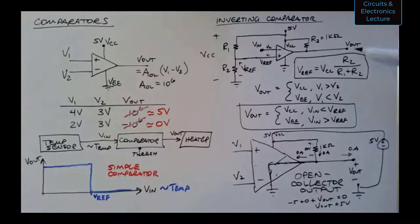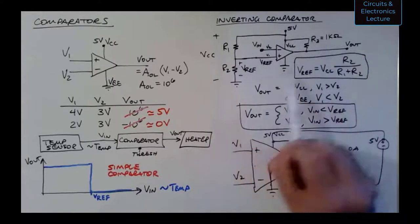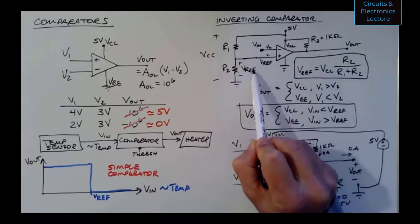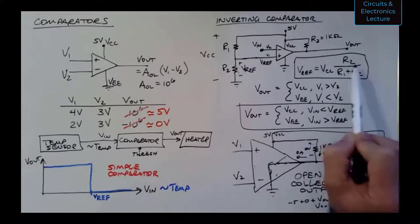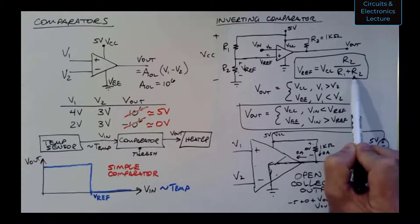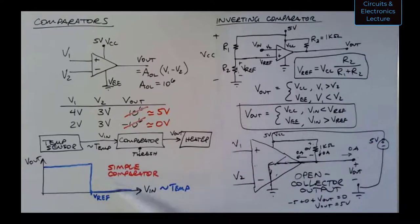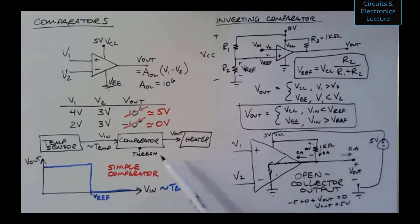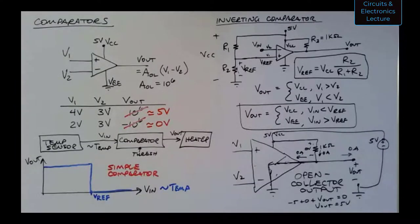The takeaway: this inverting comparator uses an op amp with three resistors — a voltage divider sets Vref and a pull-up resistor R3 provides the high output voltage for the open collector output. When input voltage is high the output is low; when input is low the output is high. This is appropriate for a heater thermostat characteristic.